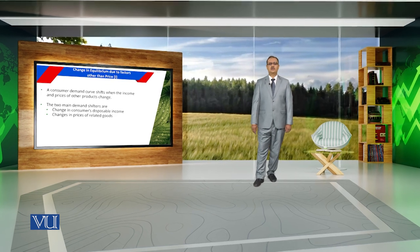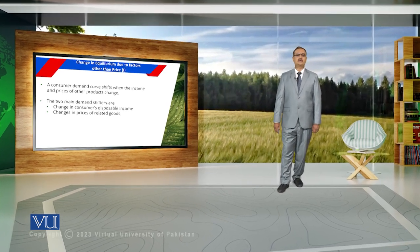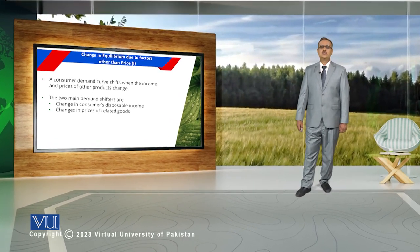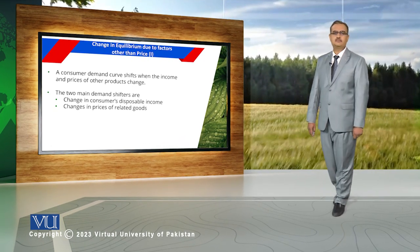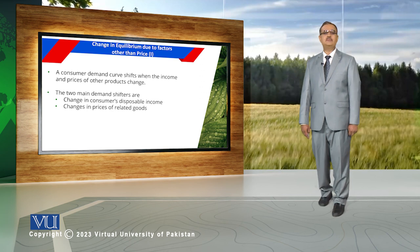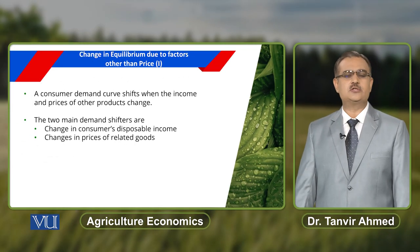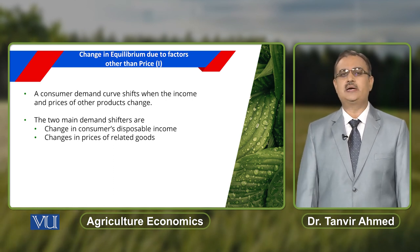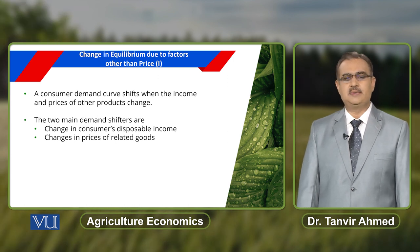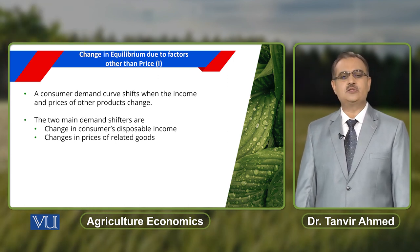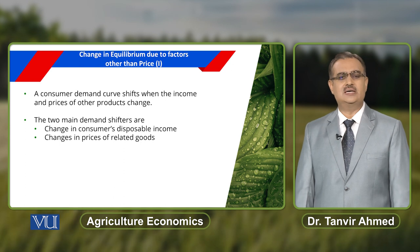Two main factors that can contribute towards change in equilibrium are: change in consumer's disposable income, and change in price of related goods. Besides change in price of apples, if there is change in income of the consumer, it also leads towards change in equilibrium. Similarly, if there is change in price of related goods, it also results in change in equilibrium.